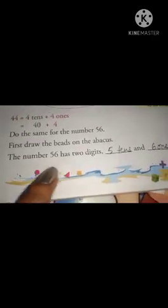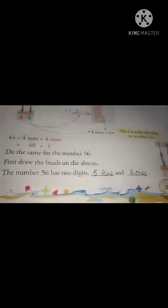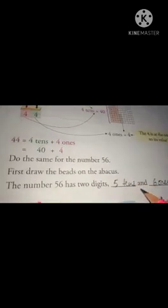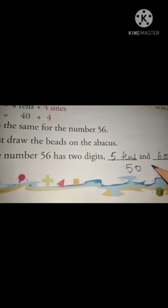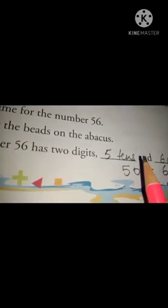Now, how do we write this? The number 56 has two digits. It means 5 tens and 6 ones. And how can we write this? 5 tens, 50 plus 6. We can write this as well. 5 tens means 50 plus 6.